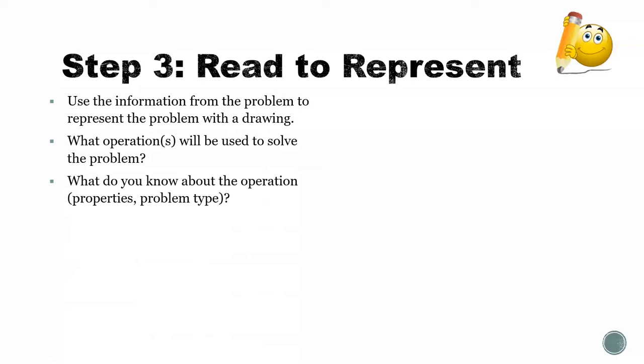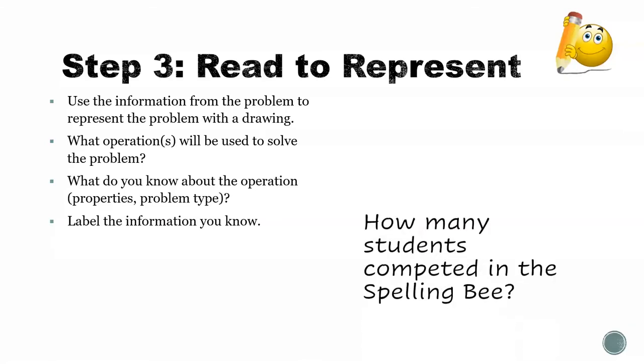We should also start thinking about what we know about that operation. So what properties or problem types or strategies do we start using when we use that operation? And we'll make sure that we label the information that we know.